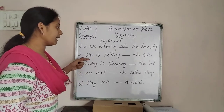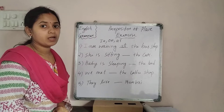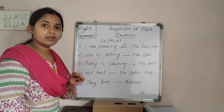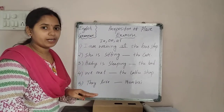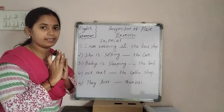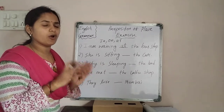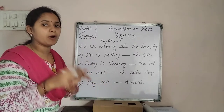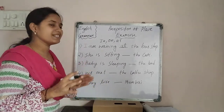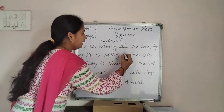Moving to the second one: she is sitting dash the car. If we have a boundary and the action is carried out inside that boundary, then we use in. So the answer is: she is sitting in the car.